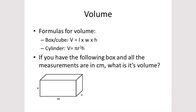Now let's look at how to calculate the volume of a solid by measurement. If it is a cube or a figure with three dimensions, you calculate it by multiplying length by width by height. In the case of a cylinder, the volume is pi times the radius squared times the height. For example, you have a box that is 4 centimeters by 10 centimeters by 3 centimeters.